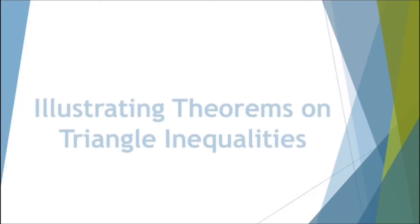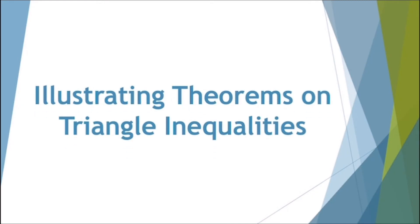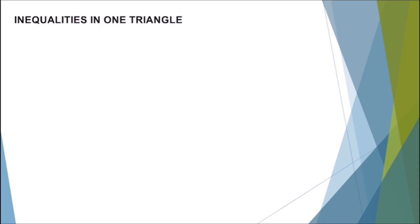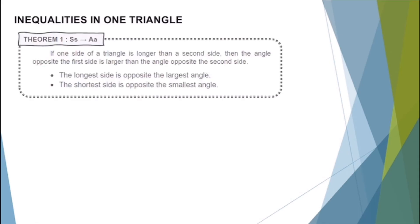Our lesson for today is all about illustrating theorems on triangle inequalities. Let's study first the inequalities in one triangle. Theorem 1: If one side of a triangle is longer than a second side, then the angle opposite the first side is larger than the angle opposite the second side.